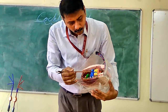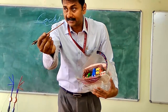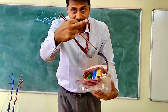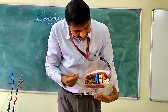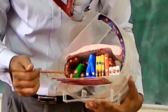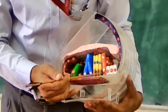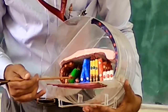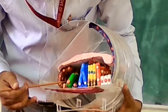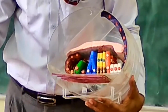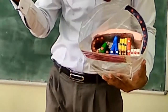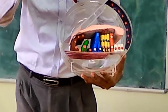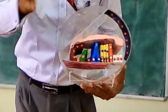We also have supporting cells. You can see the white, red, brown, and blue coloured cells — these are all supporting cells: Hensen cells, Deiters cells, Claudius cells, and inner phalangeal cells.